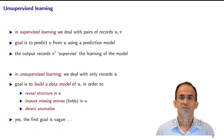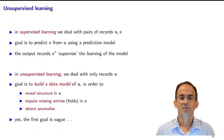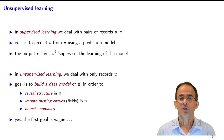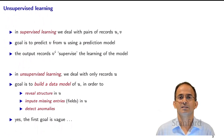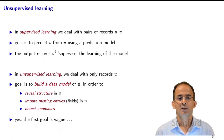In Unsupervised Learning, it's different. We only have records U and our goal is to build a model of the U's. We'd like to reveal the structure of the set of possible U's, deal with missing entries — that's called imputation — and detect anomalies: unusual cases we've not seen before. We'll make these ideas more precise.